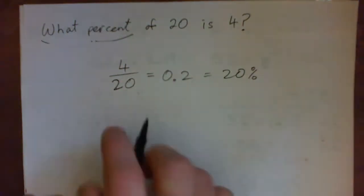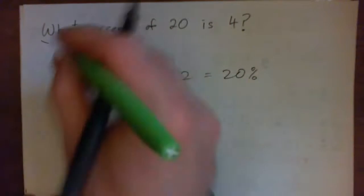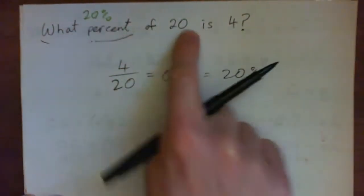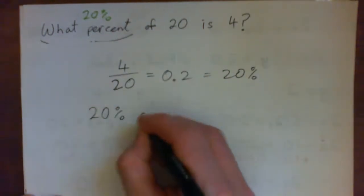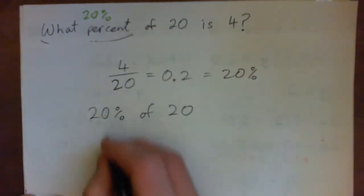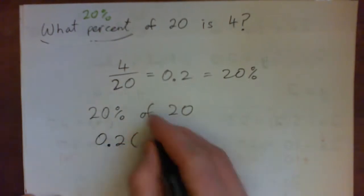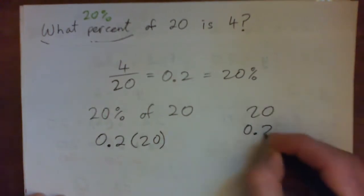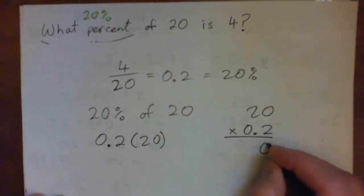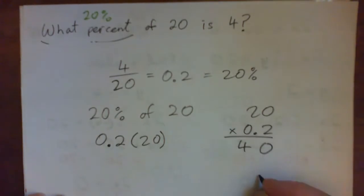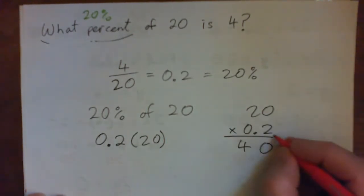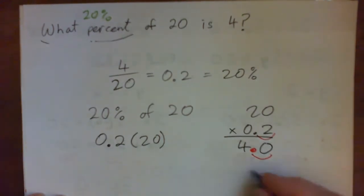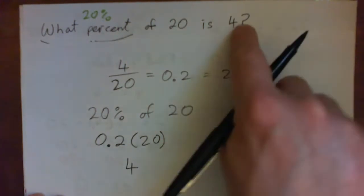We can also check our answer because our answer was 20 percent. And we could go 20 percent of 20 and figure out what that is. 20 percent becomes 0.2. Of is multiply, multiply by 20. 20 times 0.2. 2 times 0 is 0. 2 times 2 is 4. There's one decimal point in the multiplication, so there must be 1 in the answer. So this should be 4. And that is correct.